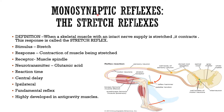This video is mainly about stretch reflex and muscle spindle. The definition of stretch reflex: when a skeletal muscle with an intact nerve supply is stretched, it contracts — this response is called stretch reflex. It is important for the maintenance of body posture. The stimulus is stretch, the response is contraction of the muscle being stretched, the receptor is the muscle spindle, and the neurotransmitter involved is glutamate.